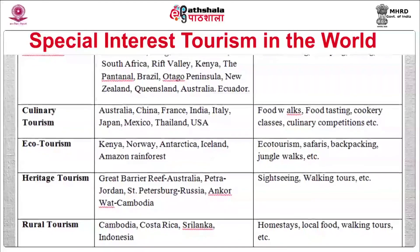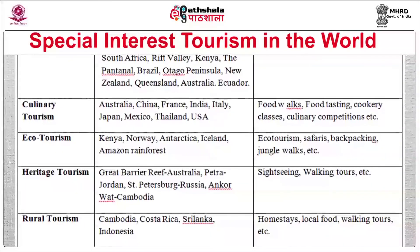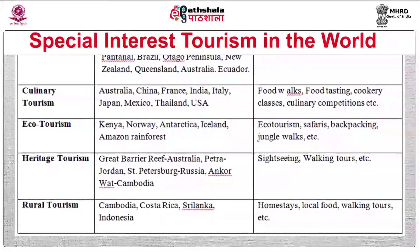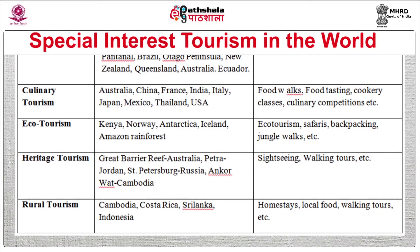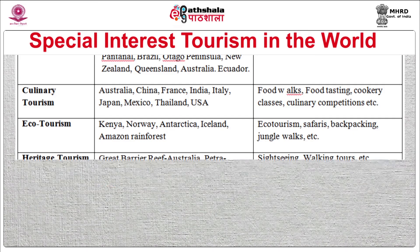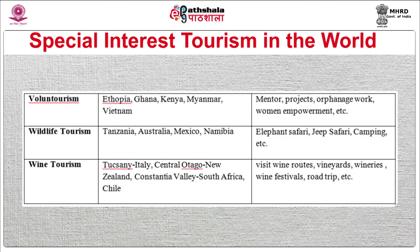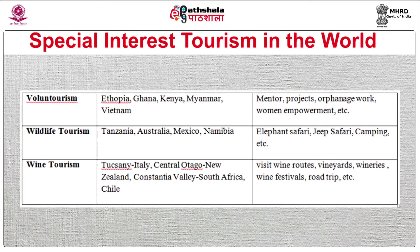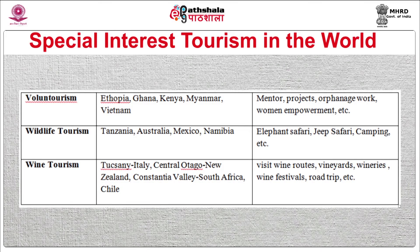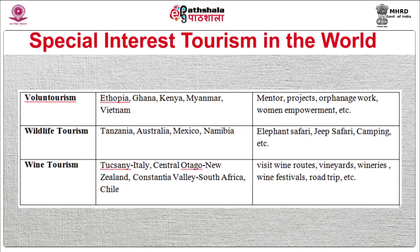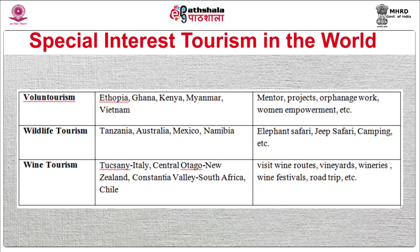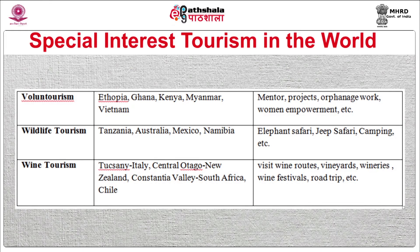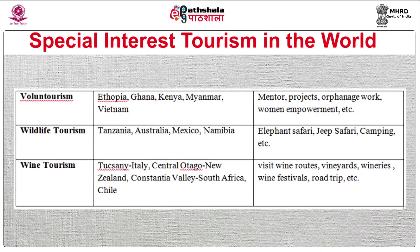For heritage tourism worldwide, destinations include the Great Barrier Reef in Australia, Petra in Jordan, and St. Petersburg, among others. For rural tourism, Cambodia, Costa Rica, Sri Lanka, Indonesia, and India are the best places. For volunteer tourism, Ethiopia, Ghana, Kenya, Myanmar, Vietnam, and India are popular destinations. For wildlife tourism, Tanzania, Australia, Mexico, and Namibia are famous, and for wine tourism, Italy, New Zealand, and South Africa are well-known destinations.